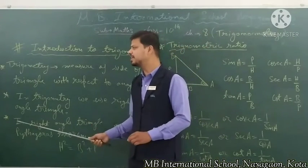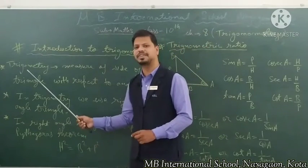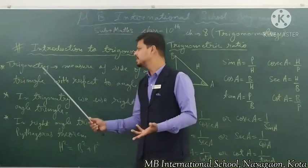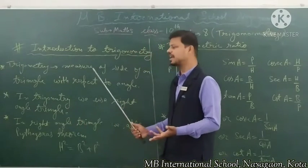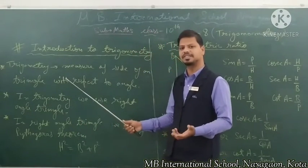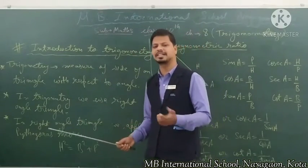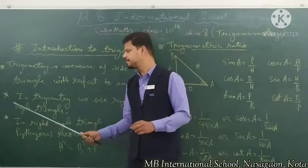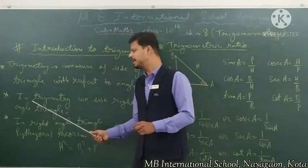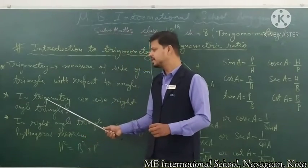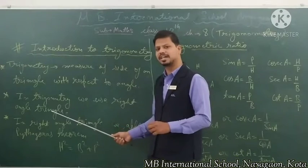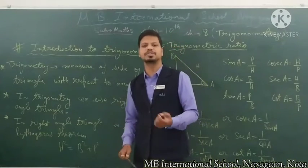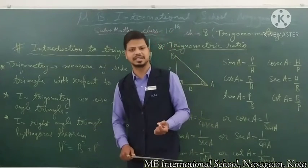So three important points: first, Trigonometry is the measurement of the sides of a triangle with respect to its angle. Second, in Trigonometry we use a right angle triangle. Third, in the right angle triangle we use the Pythagoras theorem.